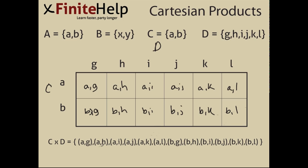C times D: (a,g), (a,h), (a,i), (a,j), and so on. I've included every single element.